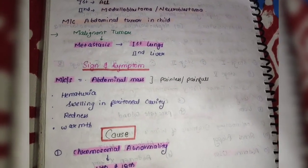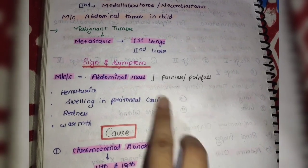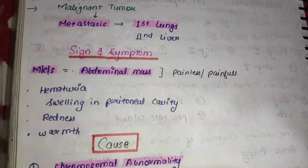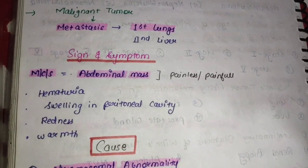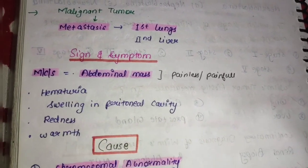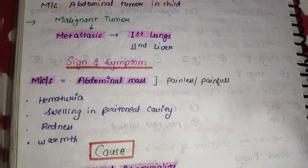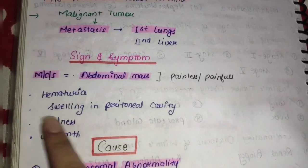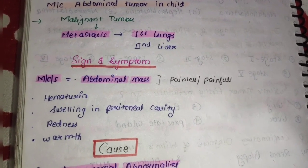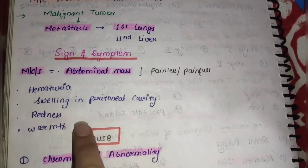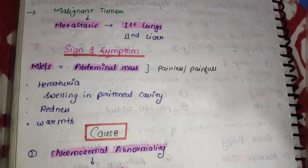कुछ signs and symptoms देखने को मिलते हैं Wilms tumor के अंदर. Most common जो sign देखने को मिलता है, वो होता है abdominal mass. Abdomen वाले area में mass feel होता है, ये painless भी हो सकता है और painful भी हो सकता है. Second, hematuria — means urine के अंदर blood देखने को मिलता है. Next, swelling in the peritoneal cavity — जो peritoneal cavity होती है, वहाँ पर swelling और inflammation देखने को मिलती है. इसके अलावा tumor की वजह से redness और warmth भी देखने को मिलती है.